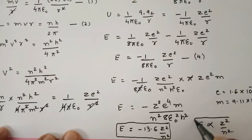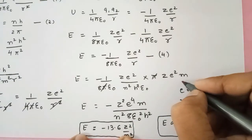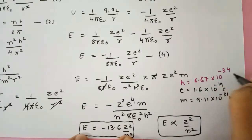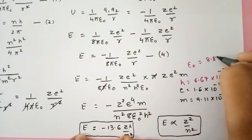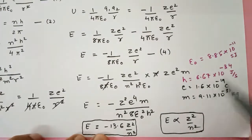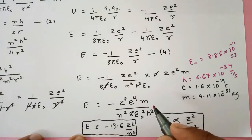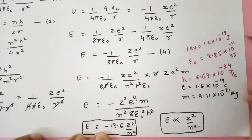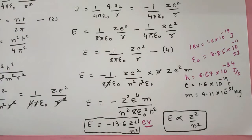Substituting the constants — charge of electron e = 1.6×10⁻¹⁹ C, mass of electron m = 9.11×10⁻³¹ kg, Planck's constant h = 6.67×10⁻³⁴ J·s, and ε₀ = 8.85×10⁻¹¹ SI units — the energy expression evaluates to E = −13.6·Z²/n² electron volts. This is the final and very important energy expression for an electron in the nth orbit.